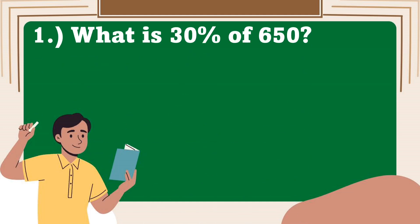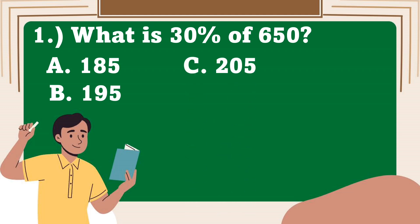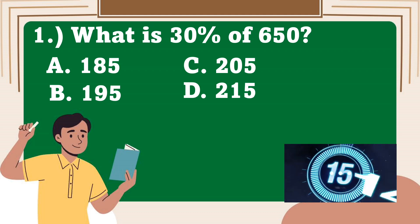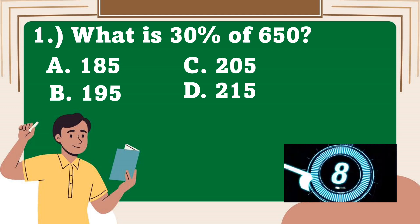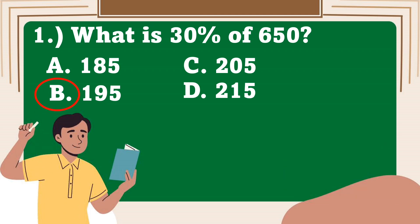Number 1. What is 30% of 650? A. 185, B. 195, C. 205, D. 215. Your timer starts now! The correct answer is B. 195.